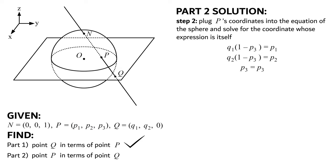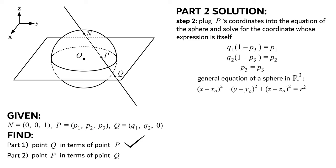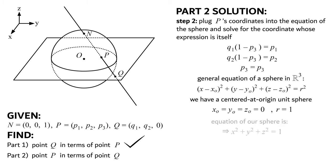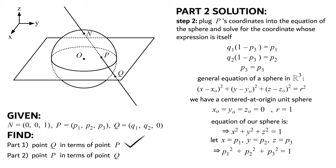We're now at step 2, which is to plug p's coordinates into the equation of the sphere and solve for the coordinate whose expression is itself. Since the best we could do for p3 was get it in terms of itself, p3 will be the coordinate we solve for first in terms of q. The general equation of a sphere in R3 is (x minus x0) squared plus (y minus y0) squared plus (z minus z0) squared equals r squared. For our center-origin unit sphere, x0, y0, and z0 are 0 and the radius is 1, giving us x² plus y² plus z² equals 1. Since point p belongs to this sphere, we plug in x equals p1, y equals p2, z equals p3, giving p1² plus p2² plus p3² equals 1.